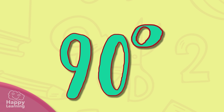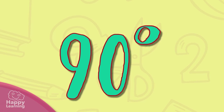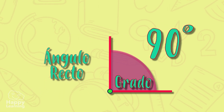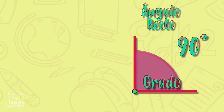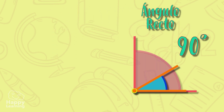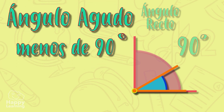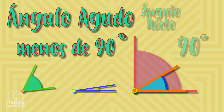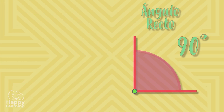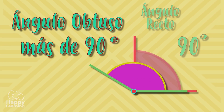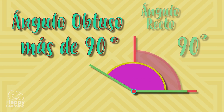We say that the right angle is the most important one because it is used to compare all of the other angles. Angles that are smaller than a right angle are called acute angles, and they measure less than 90 degrees. Angles that are bigger than a right angle are called obtuse angles and measure more than 90 degrees.